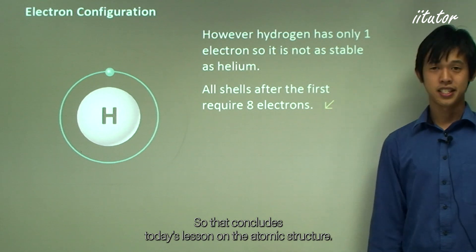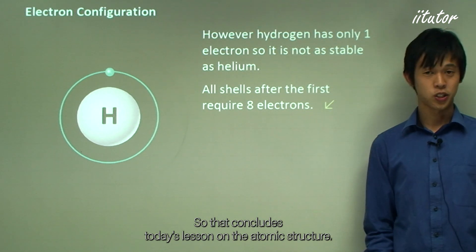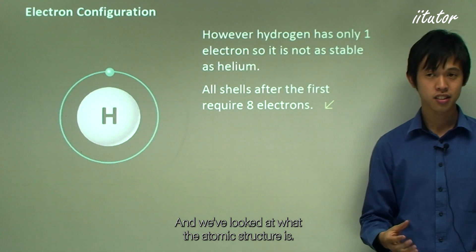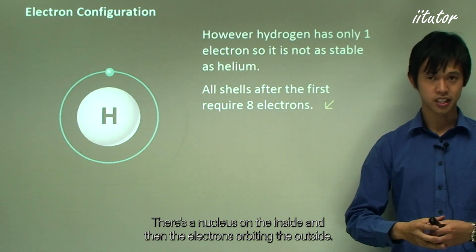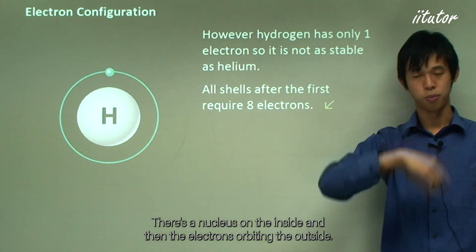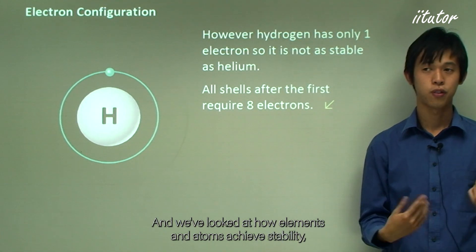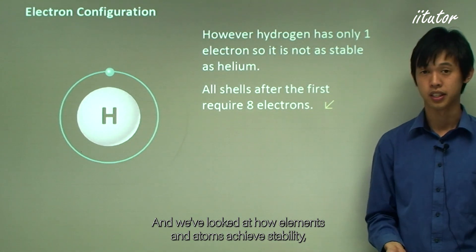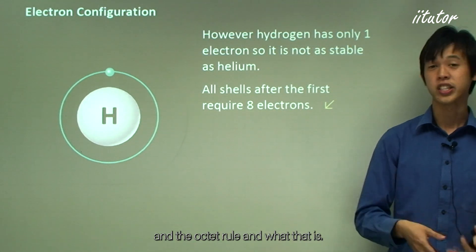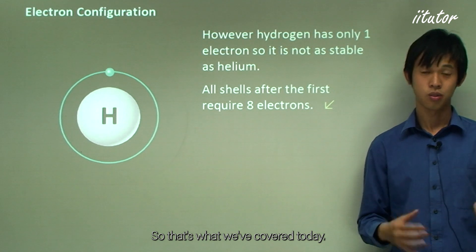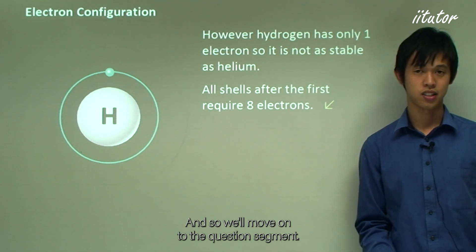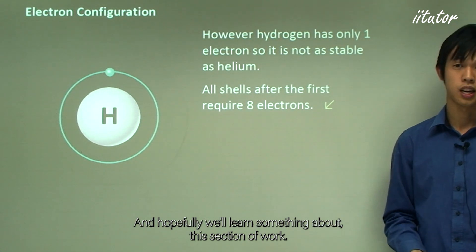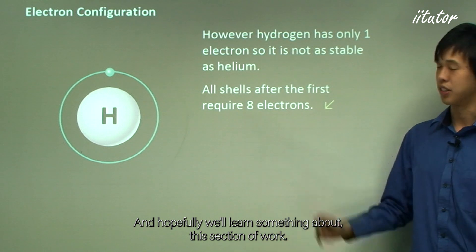That concludes the lesson on atomic structure. We've looked at what atomic structure is — the nucleus on the inside, electrons orbiting the outside — and how elements and atoms achieve stability through the octet rule. Now we'll move on to the question segment.